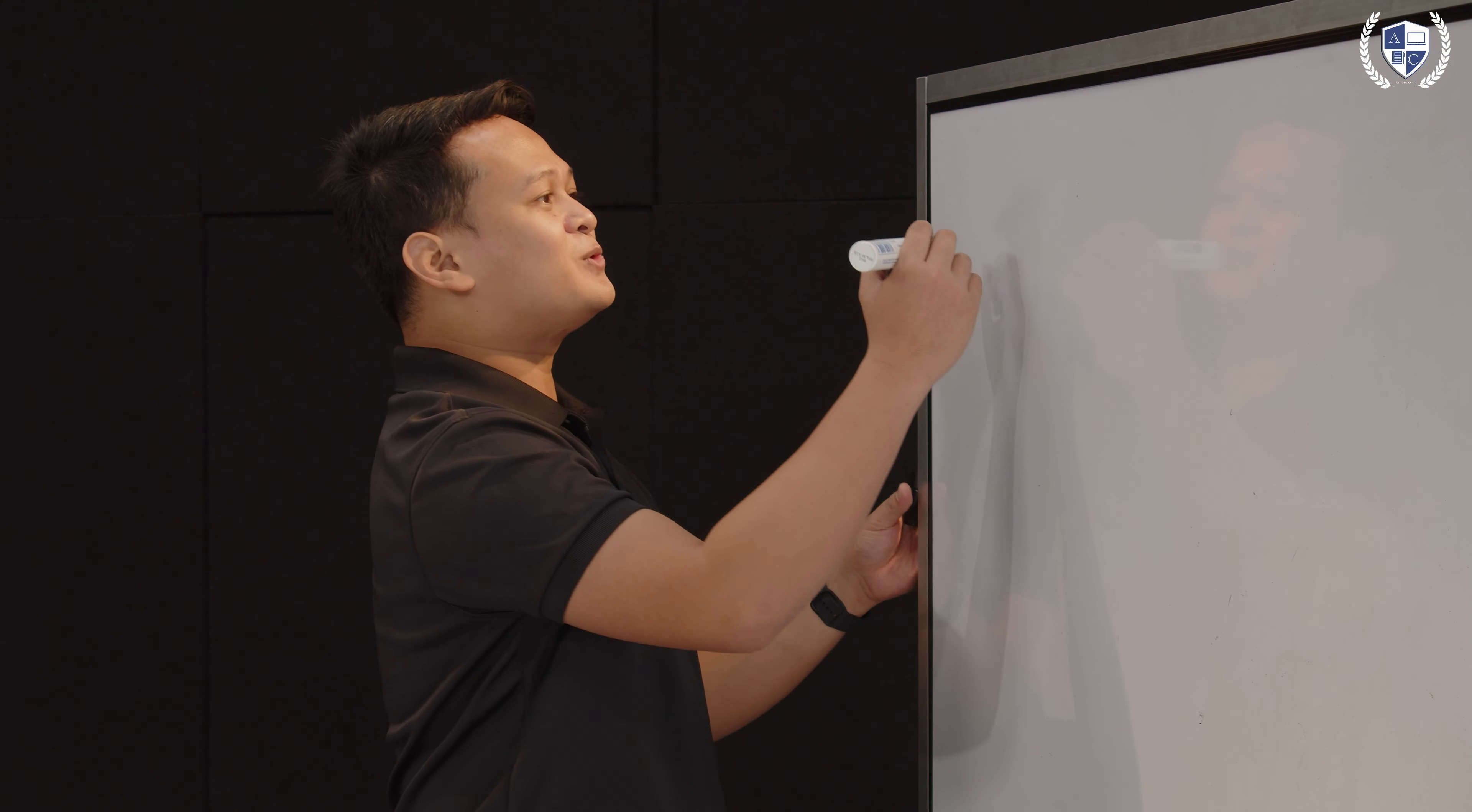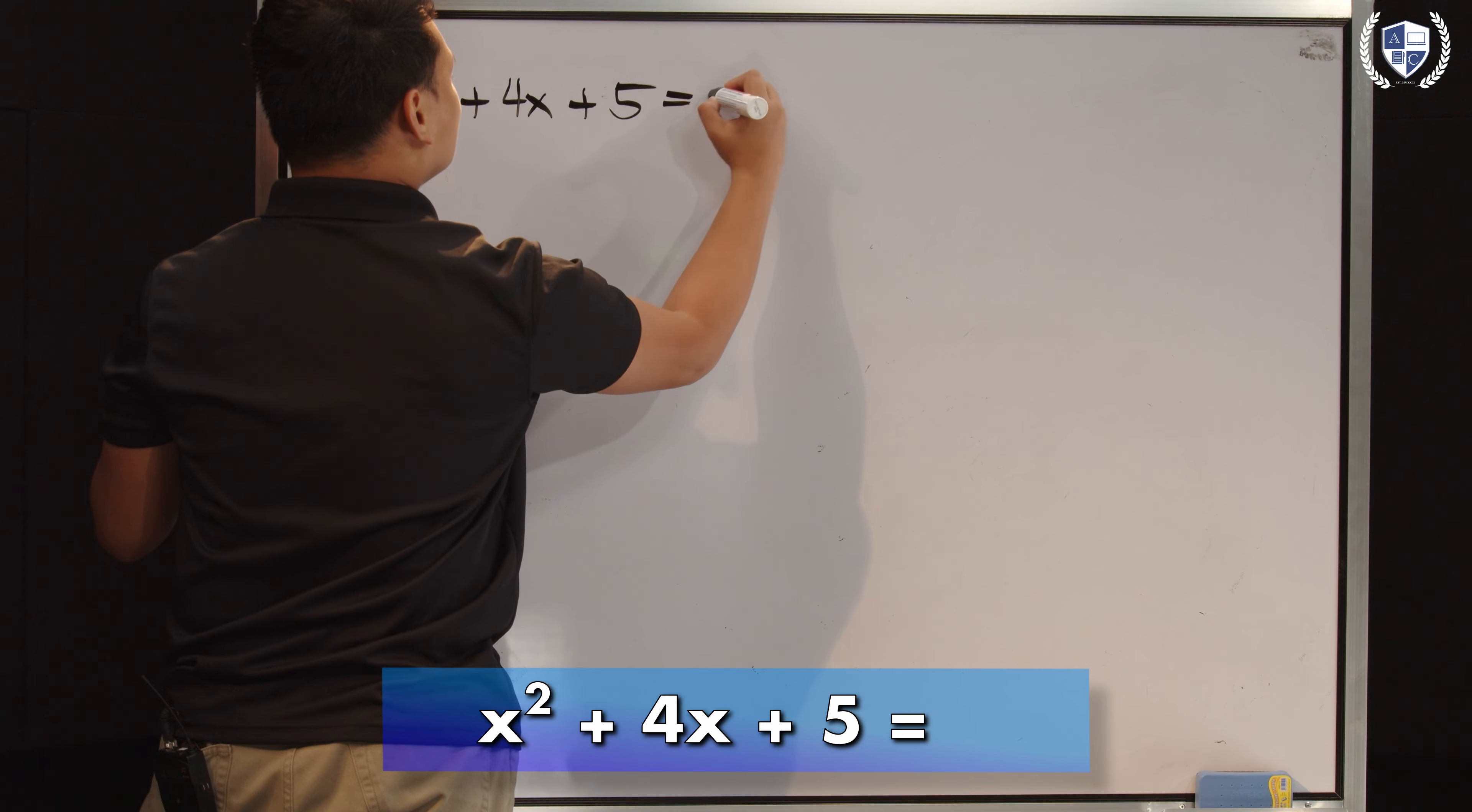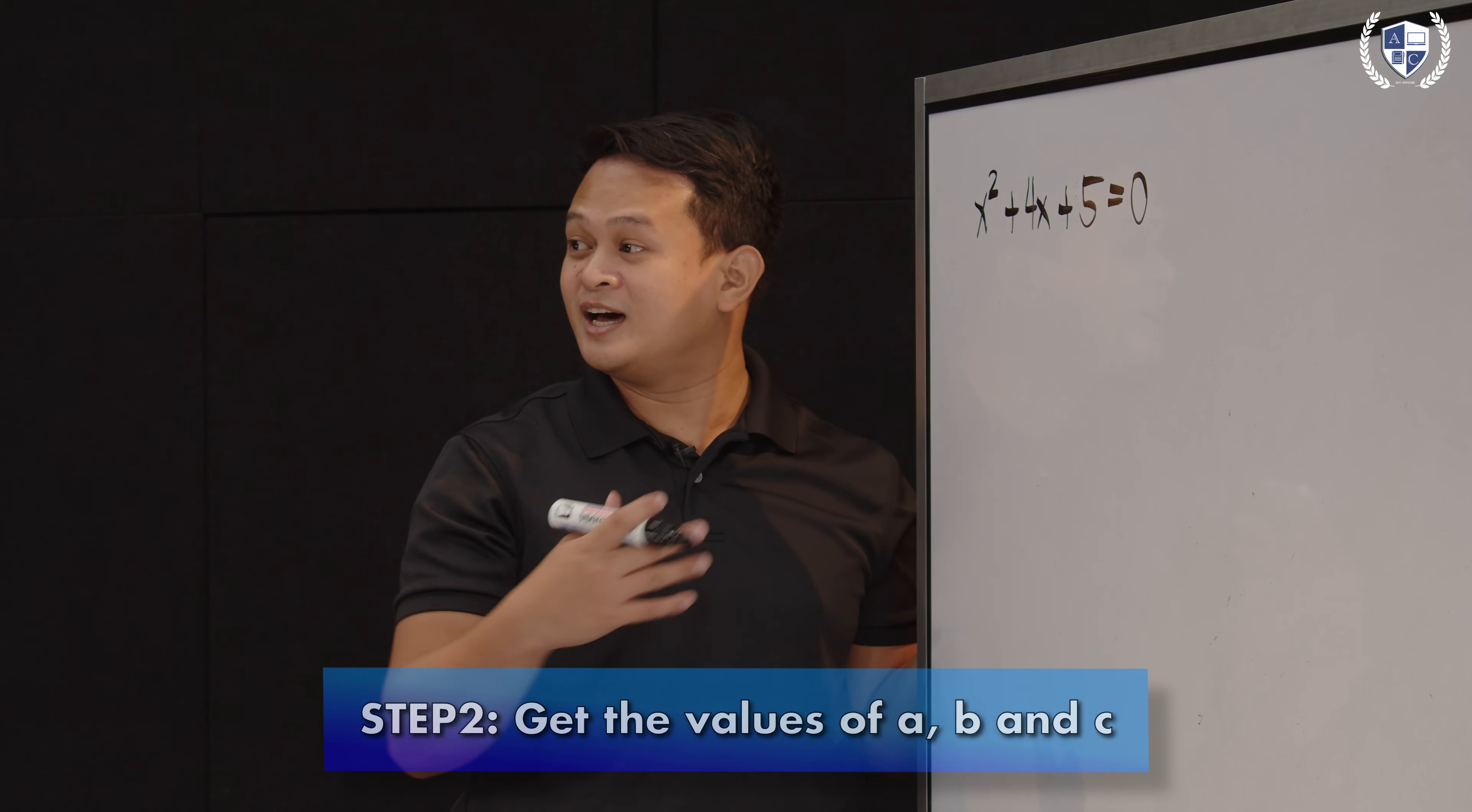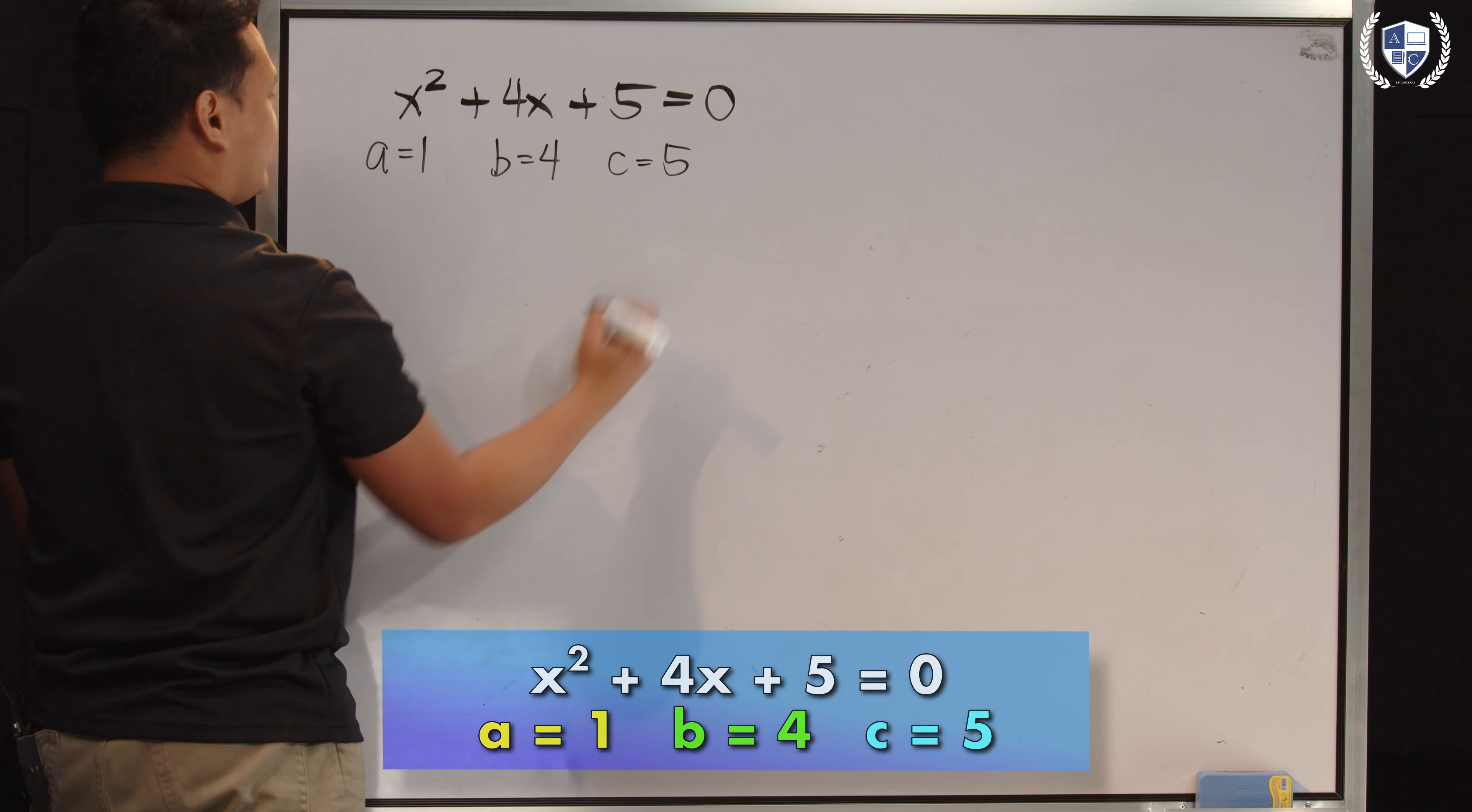So let's have another example. Let's say our quadratic equation is given by x squared plus 4x plus 5 equals 0. So masaya pa rin ang buhay natin, kasi nga, nakasulat na kagad siya sa standard form. Kasi yun yung number 1 na kailangan macheck natin. Naka-standard form ba siya? If yes, then proceed na hanapin nyo na yung values ng A, B, and C natin. So A here is 1, B here is 4, and C is 5.